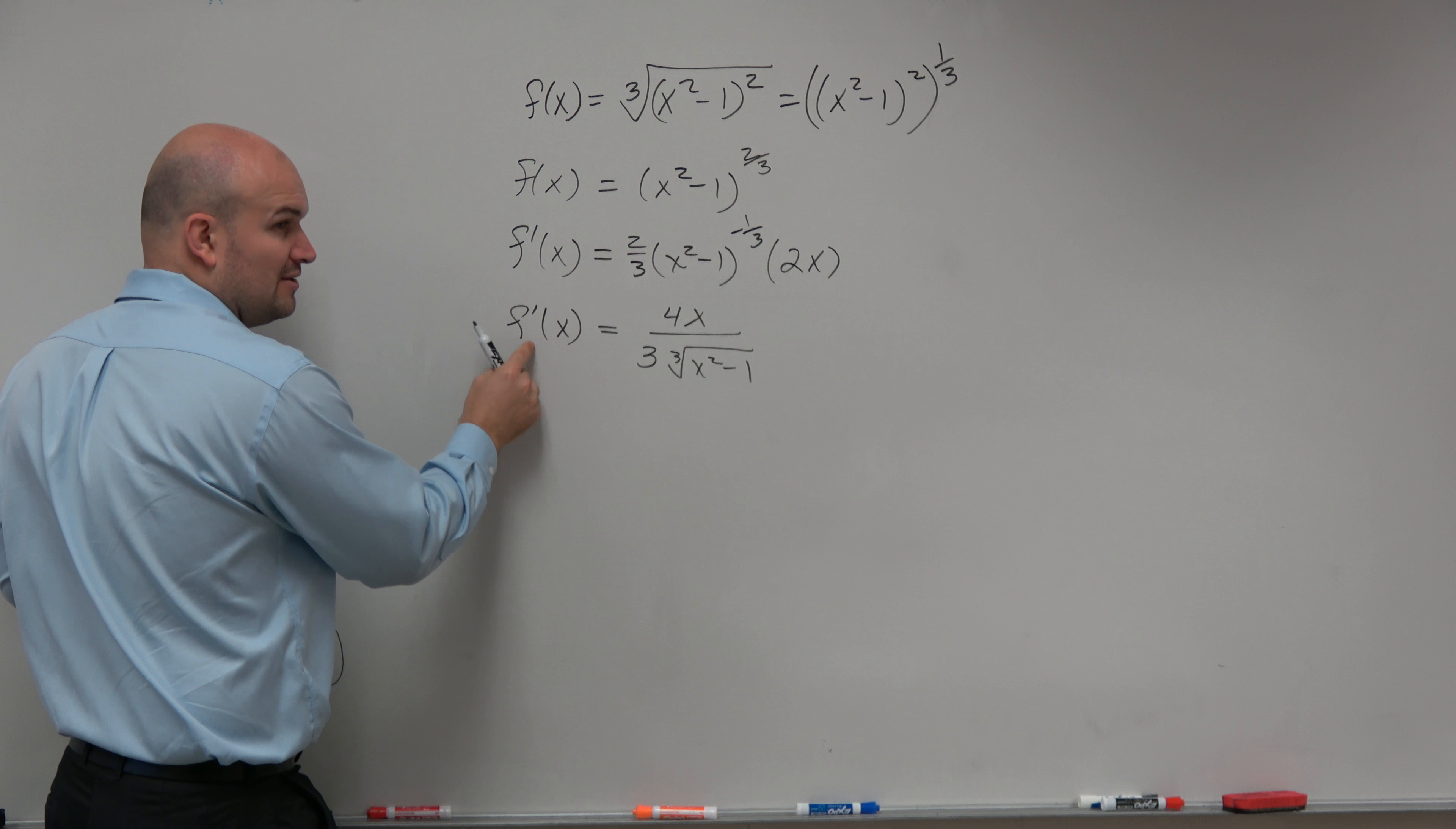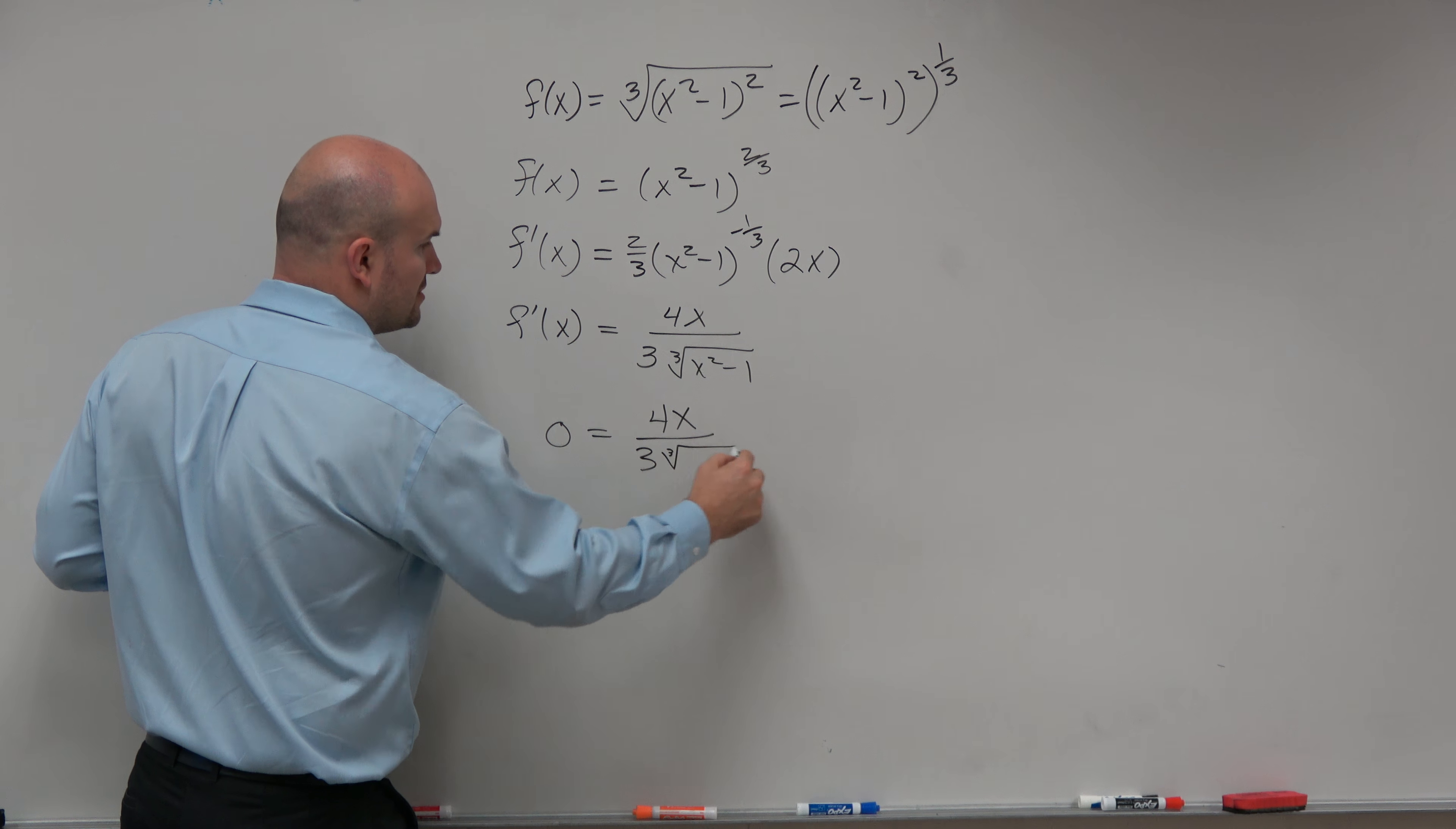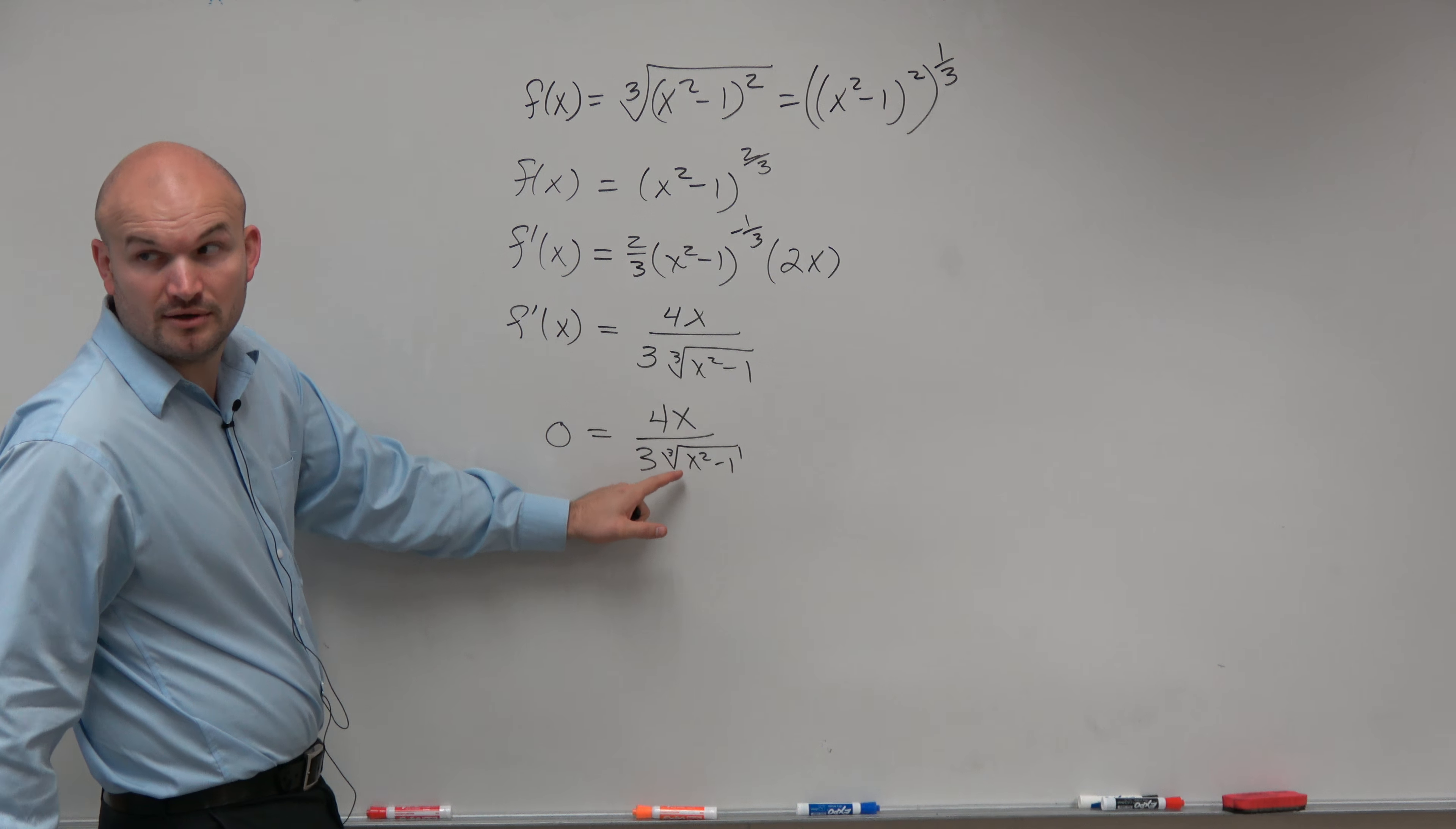So if I want to find where f'(x) is equal to 0, then 0 equals 4x over 3 times the cube root of (x² - 1). So how do I solve for x? Well, we can't solve for x when it's in the denominator, right?